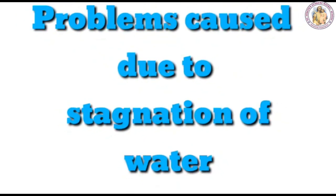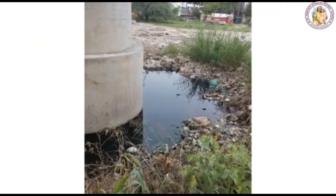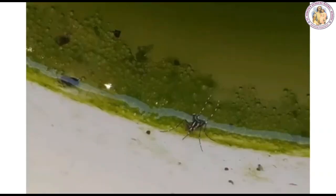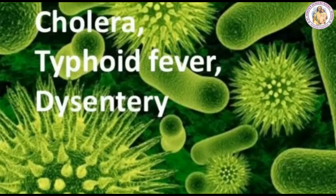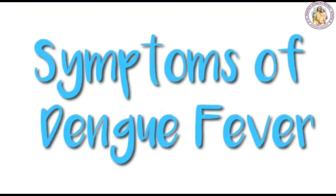Let us see what are the problems caused due to stagnation of water. Stagnant water can become a breeding ground for mosquitoes that transmit diseases. Malaria and dengue fever are the main diseases caused by stagnant water. Waterborne diseases such as cholera, dysentery, and typhoid are caused by drinking unclean water. Now let us see the symptoms of dengue fever.